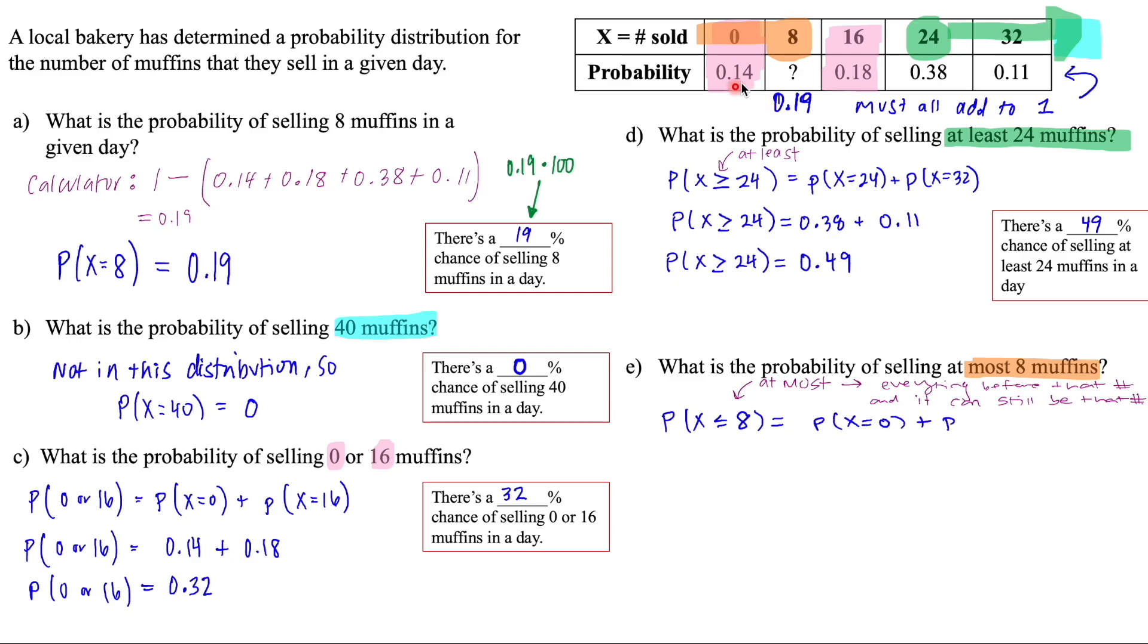So that means that we are going to add the probability that X is equal to zero and we're going to add the probability that X is equal to eight. So 0.14 plus 0.19 will give us 0.33. And that means that there is a 33% chance of selling at most eight muffins.